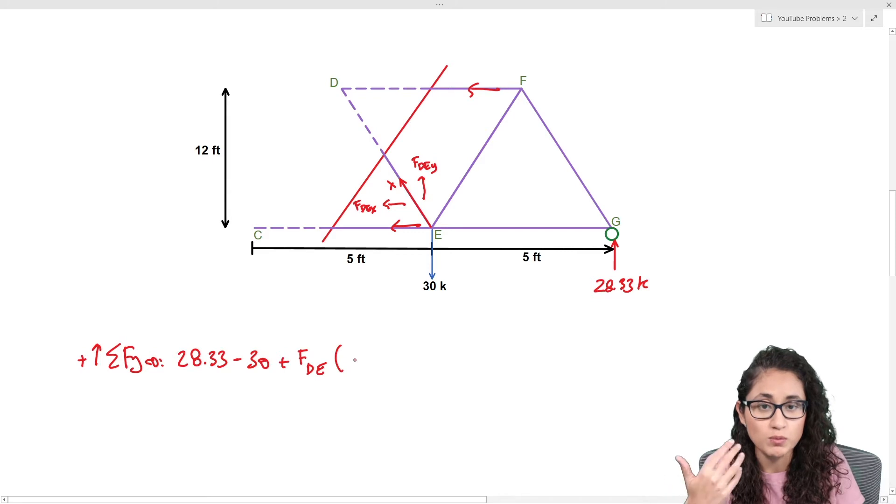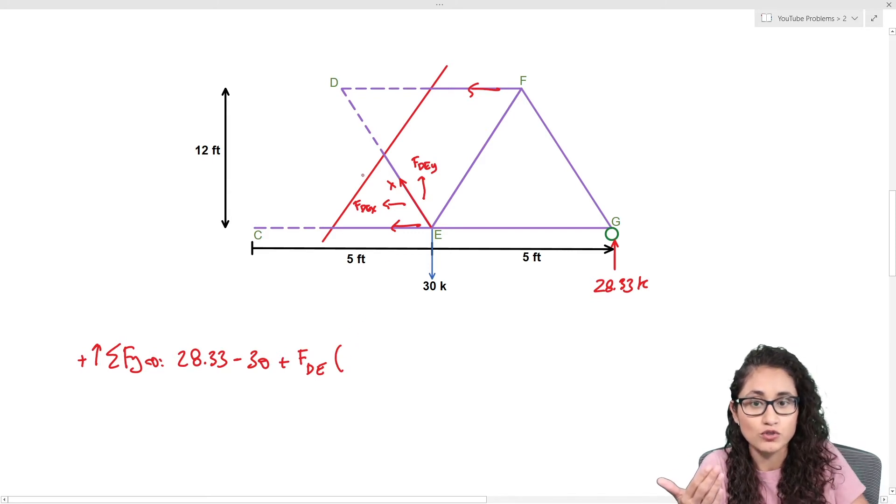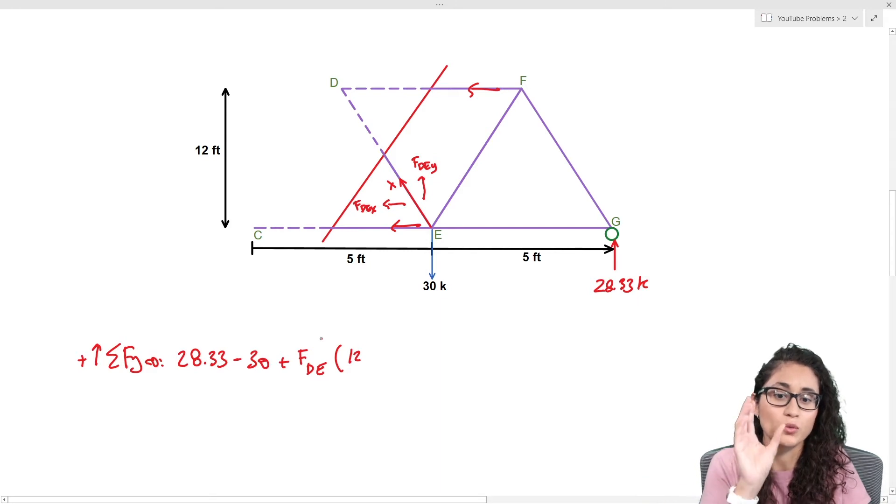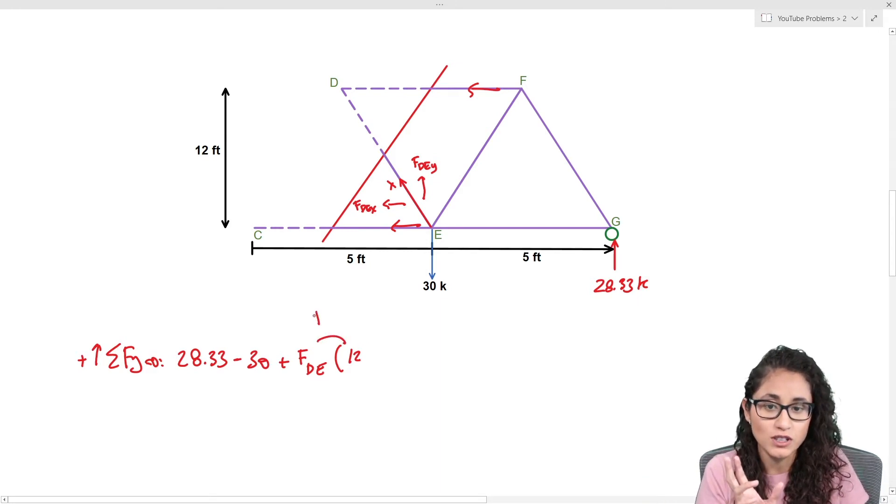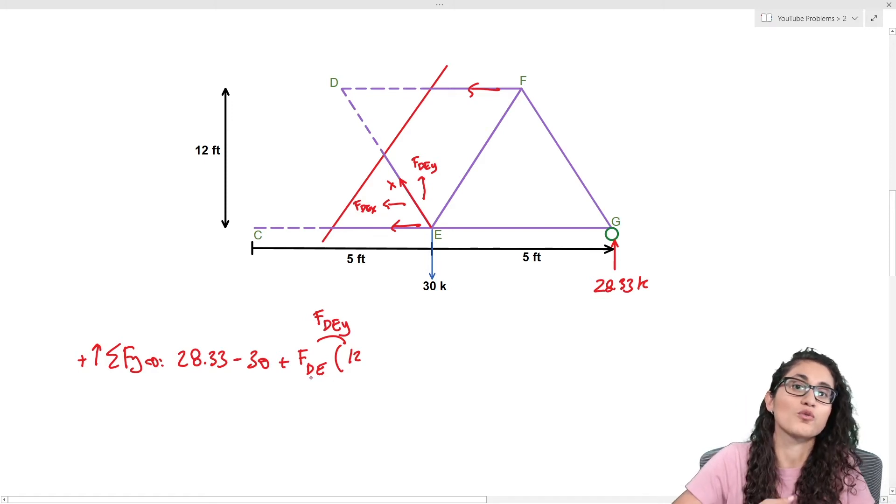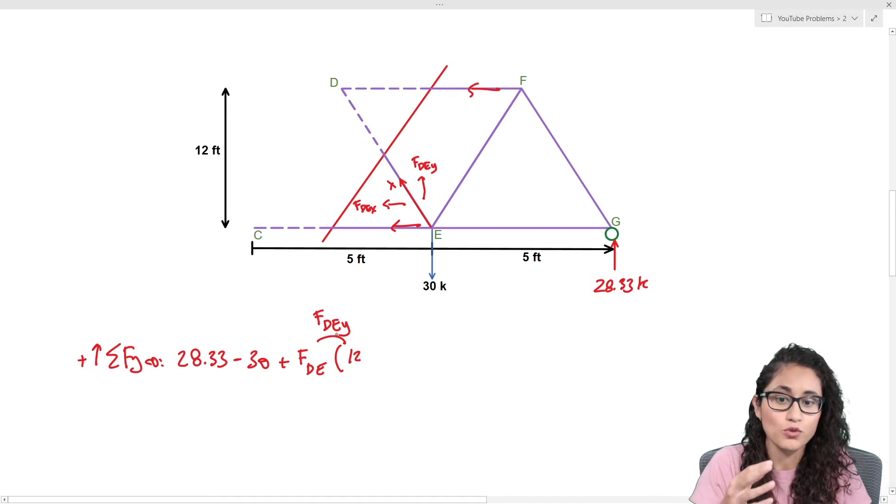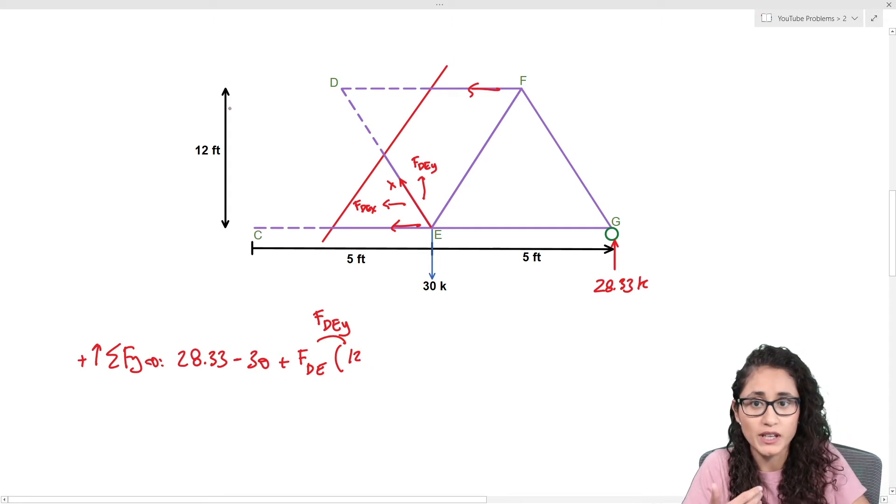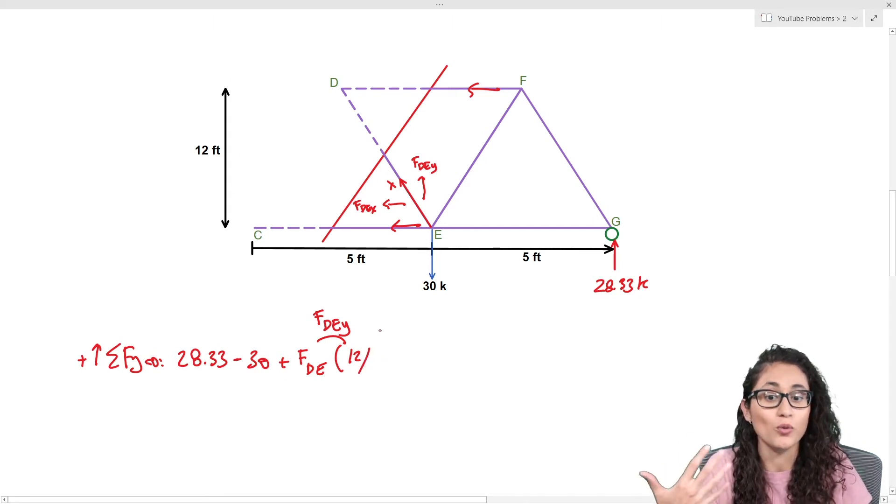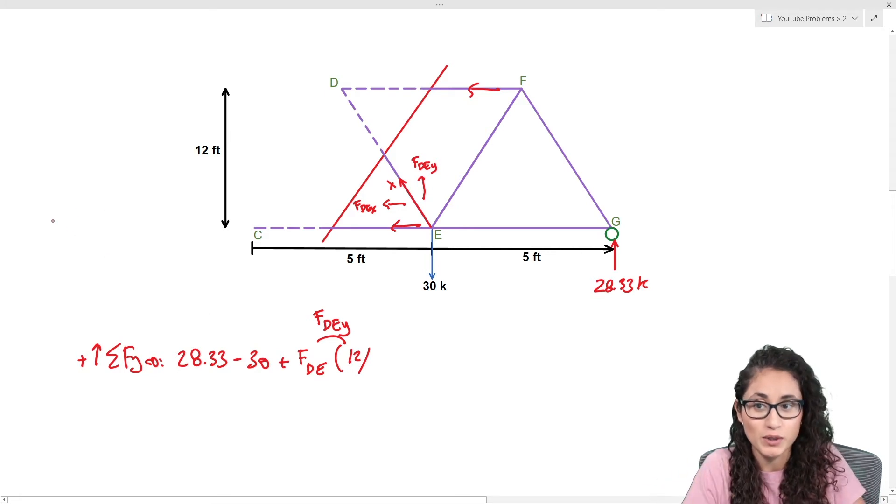We're going to do force DE and multiply it by 12 because we got to use similar triangles. What I'm doing here is substituting FDE_Y. We're looking for force DE, we don't want force DE_Y, so we gotta write force DE_Y in terms of force DE. To do that we use similar triangles. We're gonna have 12 and divide it by the hypotenuse.